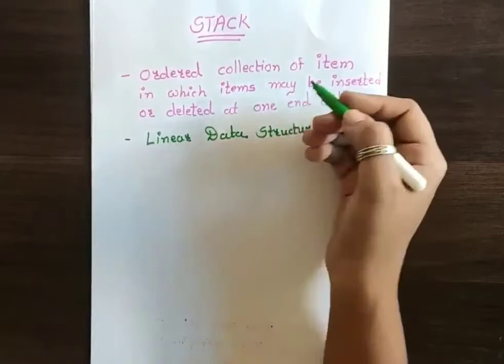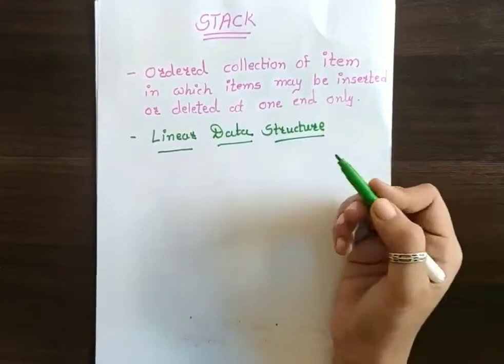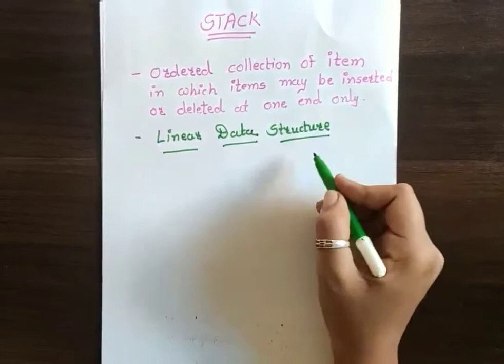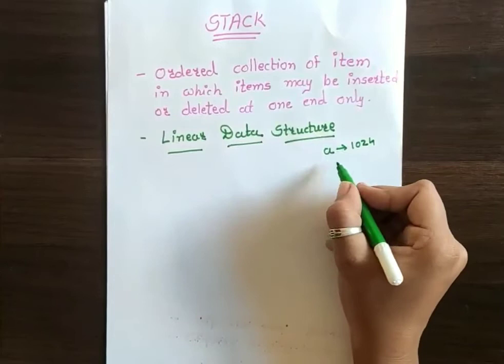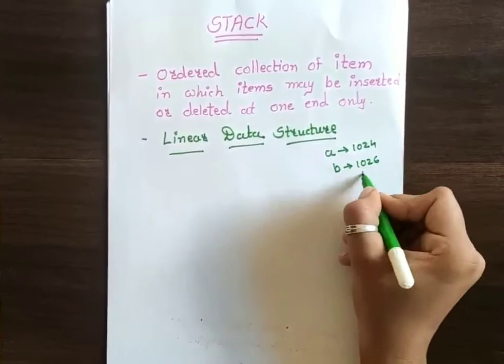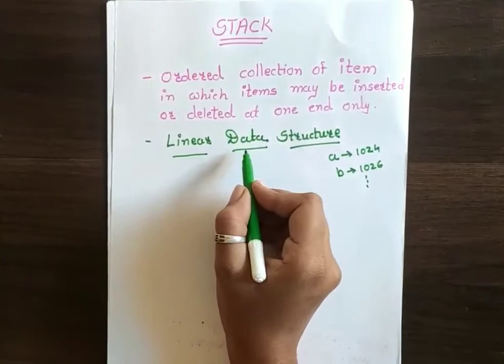Hello everyone. In this video lecture we are going to study about stack. Stack is a one kind of linear data structure. Linear data structure means that kind of data structure where we store the data in a sequential manner. Suppose I have stored one data A at 1024 location and it takes two bytes per memory, so B would be stored at 1026 location and so on. That means it is in a sequential manner — that is my linear data structure.